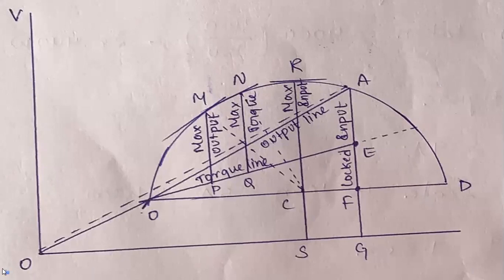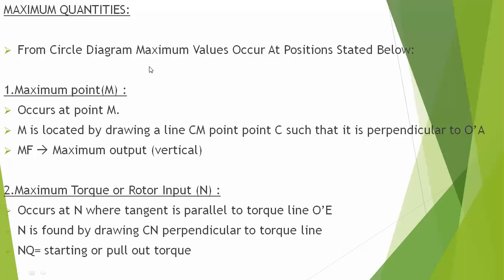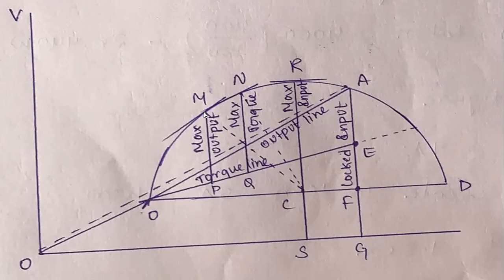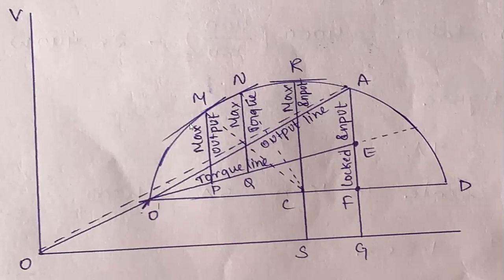How they occur, I will explain. First one: maximum point M. This maximum point will be occurring at M where the tangent is parallel to output line O'A. Here O'A will be there — this is O', this is A. So M will be occurring where the tangent is parallel to O'A. This tangent line is parallel to O'A line, which is called the output line.